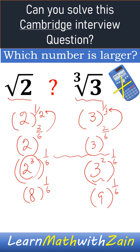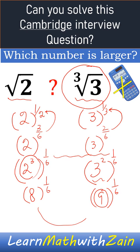The powers are the same and 9 is greater than 8, so cube root of 3 is greater than square root of 2.